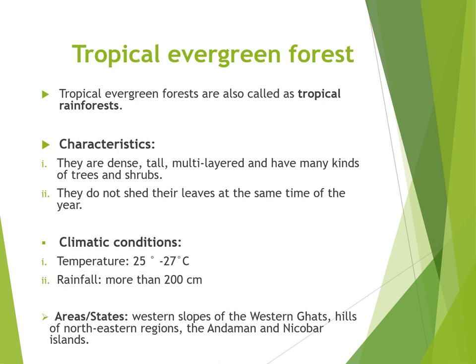Tropical evergreen forests are also called tropical rainforests. They are made up of evergreen trees. They are dense, tall, multi-layered, and have many kinds of trees and shrubs. They do not shed their leaves at the same time of the year, and hence always appear green — that's why the name 'evergreen forest.' The climatic conditions required are a temperature of 25 to 27 degrees Celsius and rainfall of more than 200 centimeters annually. These forests are found on the western slope of the Western Ghats, the hills of the North Eastern regions, and the Andaman and Nicobar Islands.